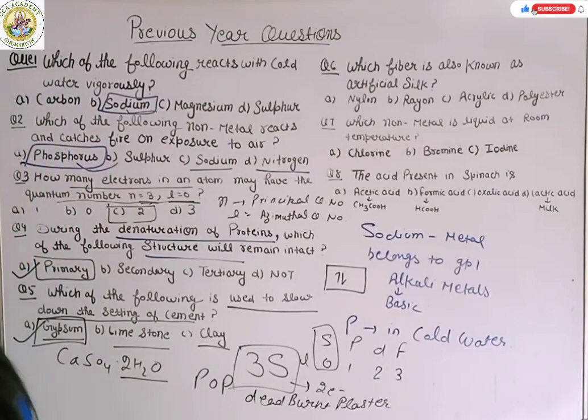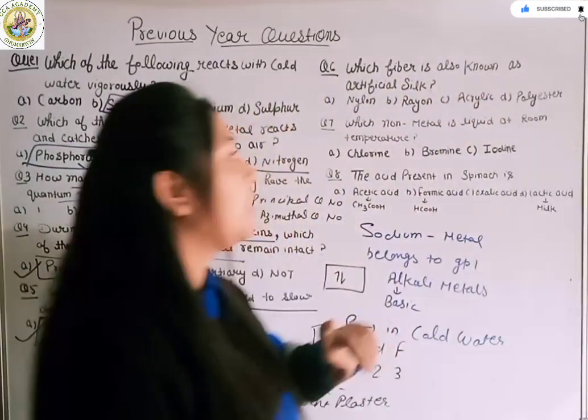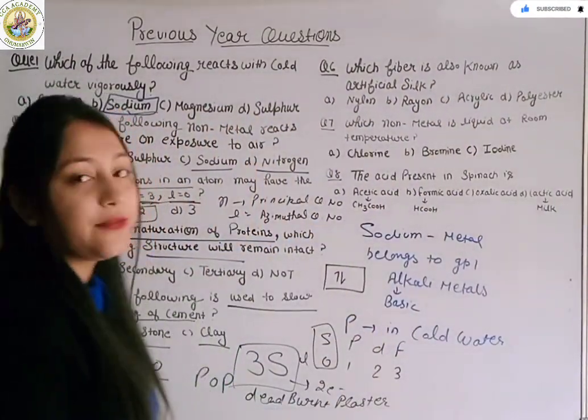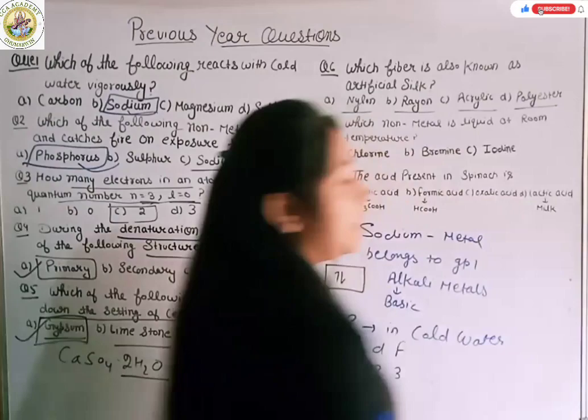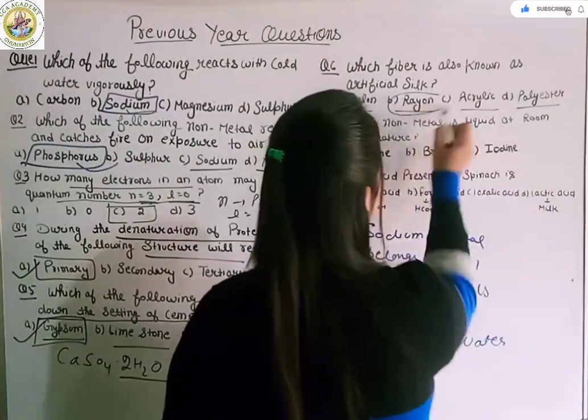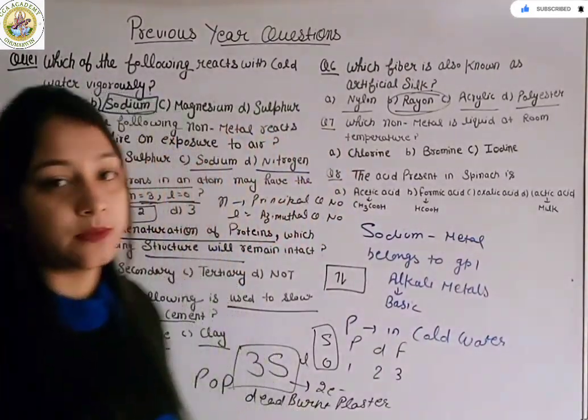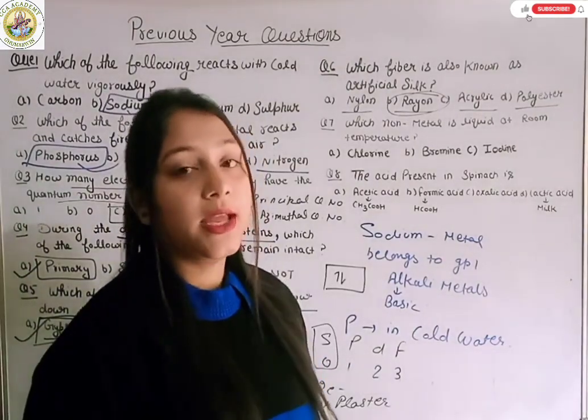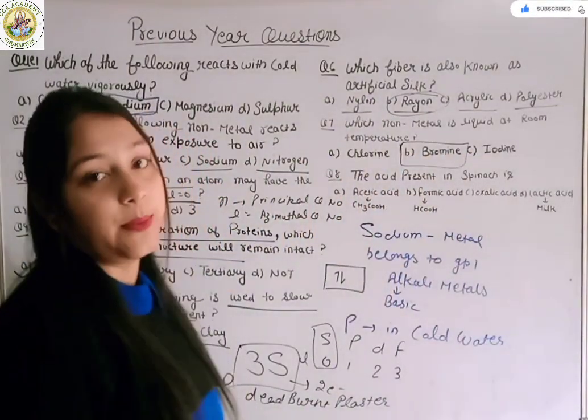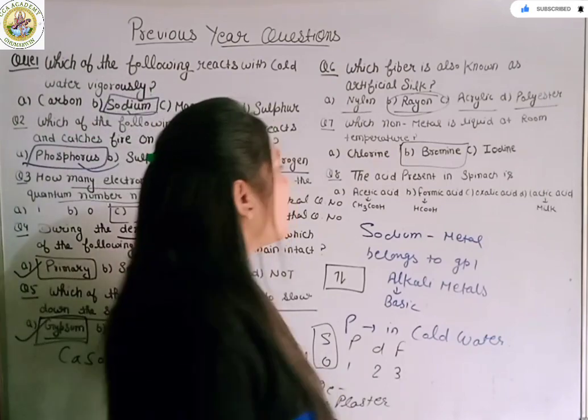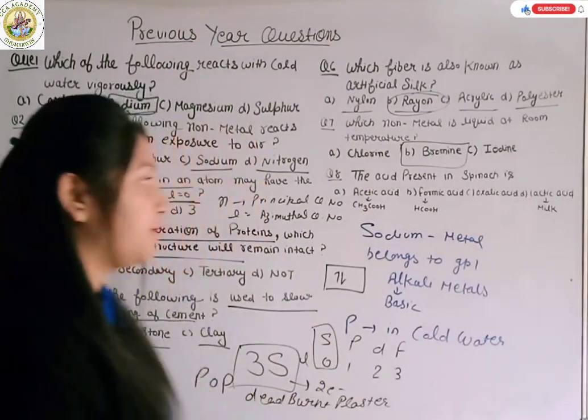Next question is which fiber is also known as artificial silk? Nylon, rayon, acrylic or polyester. So the right option B is rayon. Clear? Next question: which non-metal is liquid at room temperature? First you should know which is non-metal. So bromine is a non-metal and it is liquid at room temperature.